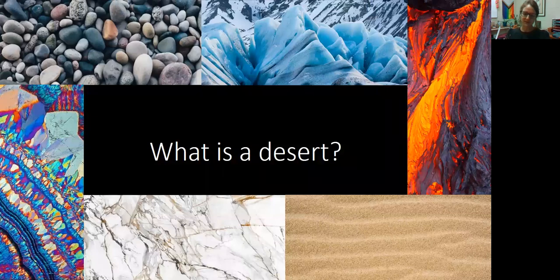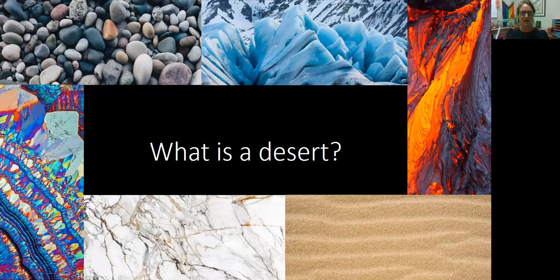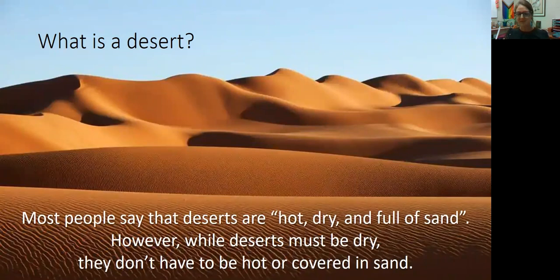What is a desert? I want you to picture a desert in your mind. You might think of something like this — lots of sand dunes, not a lot of vegetation. So most people would say that deserts are hot, dry, and full of sand. And while this can be true, all deserts do have to be dry, but they don't all have to be hot and they don't all have to be covered in sand.